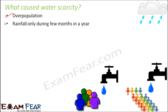With overpopulation, the demand for water becomes so high that whatever water sources are available become insufficient to meet that demand. The second cause is rainfall only during a few months of the year. Rainfall is a very important and basic source of water. If rainfall doesn't happen frequently, that can also result in water scarcity.